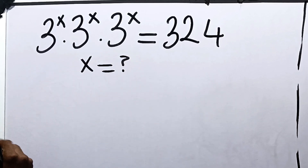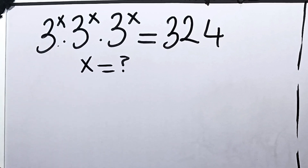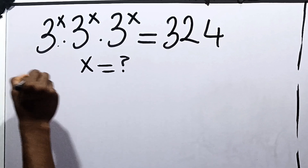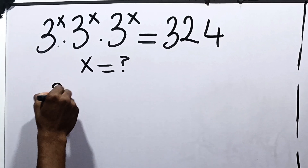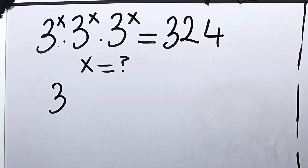First things first, when we have a dot, it simply means multiplication. So we can say that this is now equal to 3 raised to the power x, times 3 raised to the power x, times 3 raised to the power x.